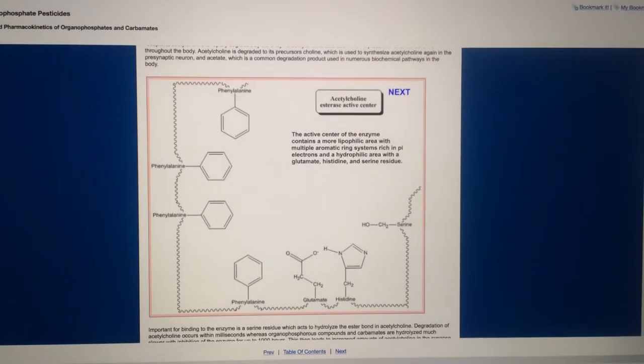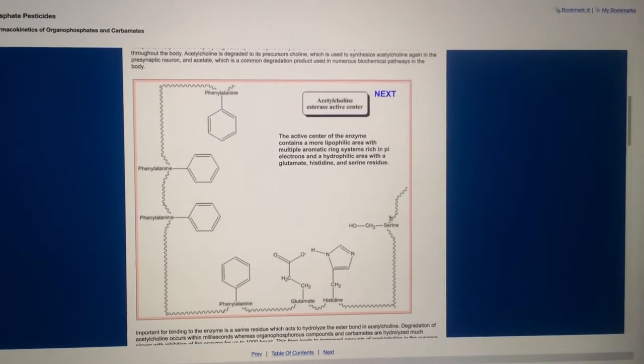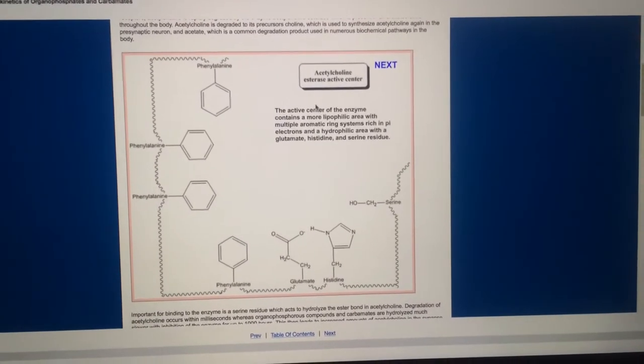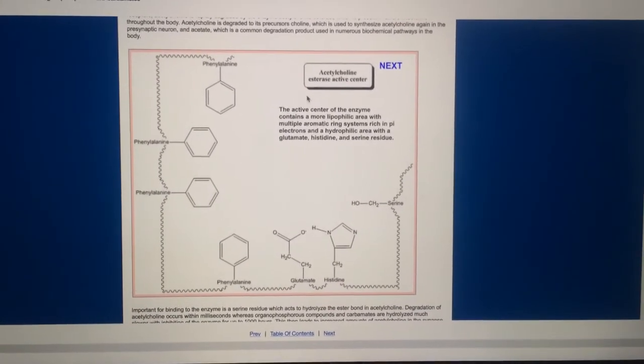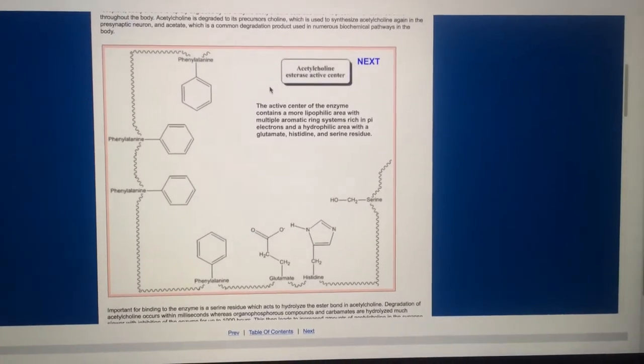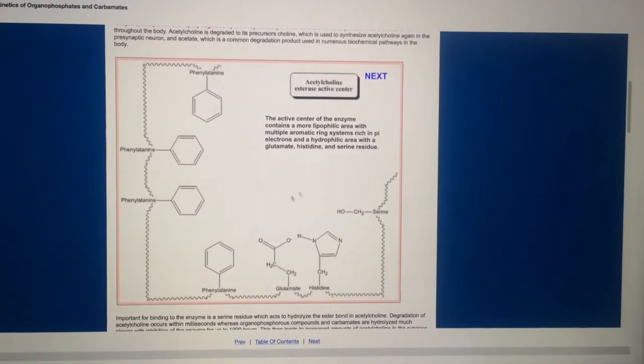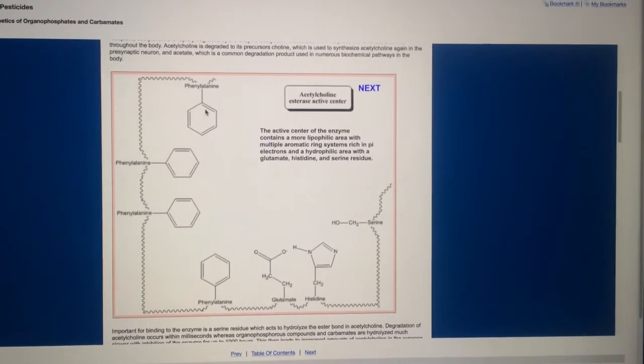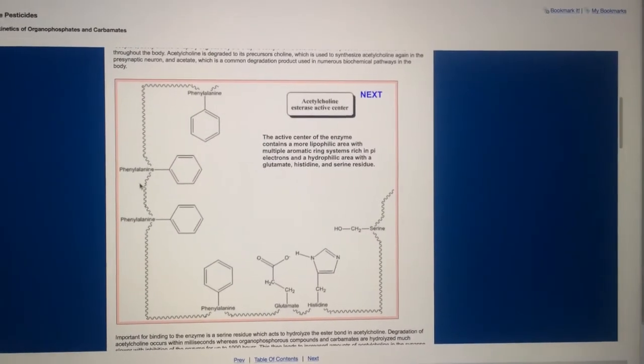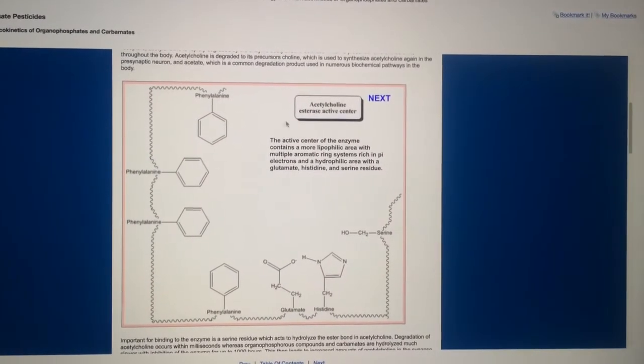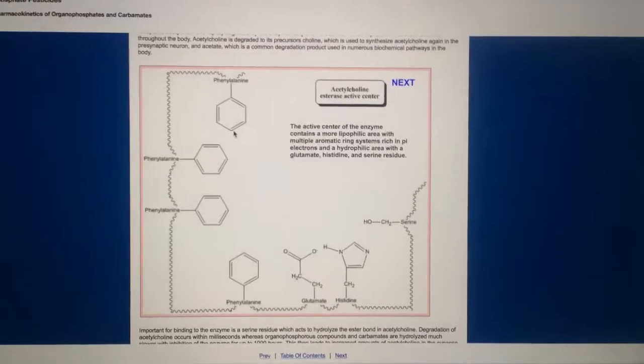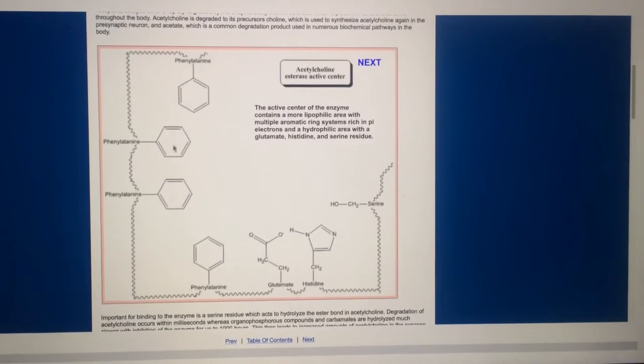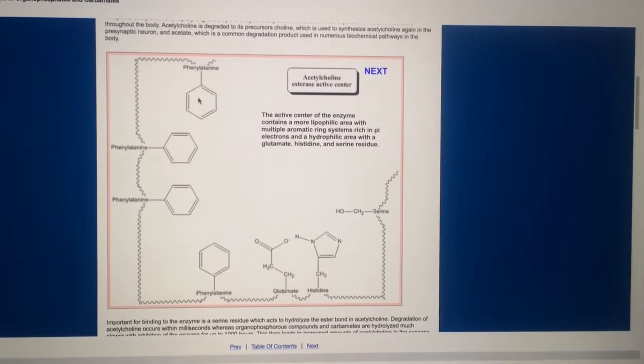This is actually a way of representing the active site of the acetylcholinesterase molecule or enzyme, and the enzyme is involved in catalyzing the breakdown of acetylcholine. So what we have here is the active site of the acetylcholinesterase enzyme, and it has a lipophilic area here with these multiple aromatic rings. These are benzene rings, and you can see that these phenylalanine molecules here are also called aromatic rings because a lot of aromatic substances from a chemistry context have these benzene rings, and the benzene ring is just a very fundamentally important molecule in biochemistry.